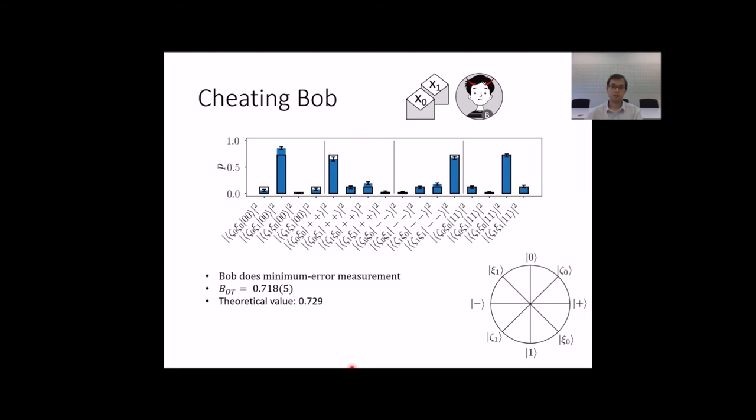Here we give what happens if Bob deviates from honest execution and attempts to learn as much as possible. Then he does not measure in bases he is supposed to ZX. Specifically, when we experimentally realize his optimal cheating strategy, we get roughly 72% cheating probability, which is slightly less than the theoretical value. For security purpose, Alice cannot rely on this value since she cannot assume that Bob has imperfect devices. But we illustrate in practice how the theoretically best attacking strategies can be implemented. Instead of plus, minus, zero and one, Bob projects onto states xi and zeta, illustrated in the cross section of Bloch Sphere here.